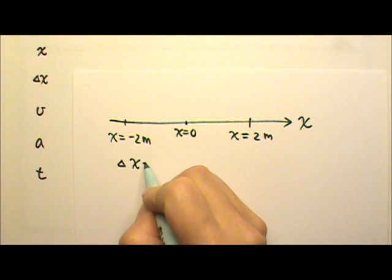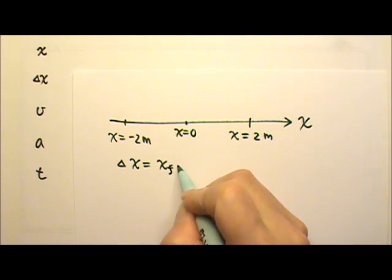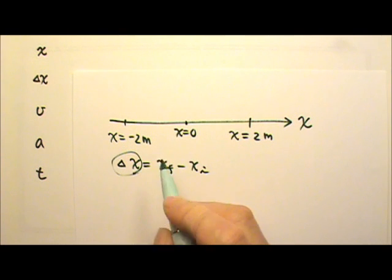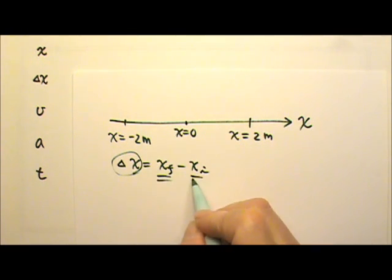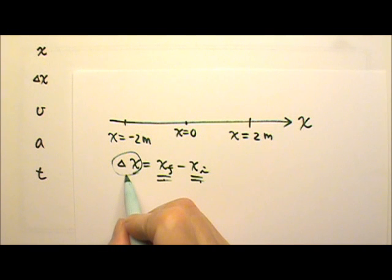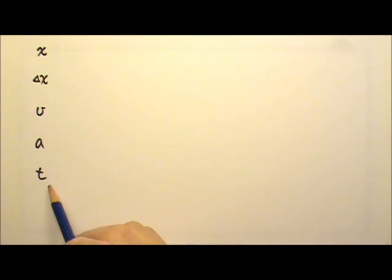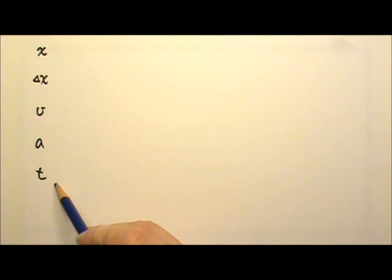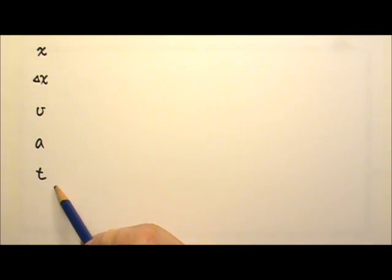That's why delta x — the final position minus the initial position — is a vector, because it comes from vectors. One vector minus another vector gives a vector as a result. As for time, in certain situations physicists may consider time as a vector, but in this course we will treat time as a scalar.